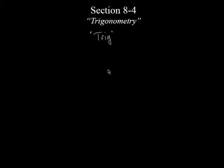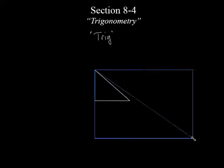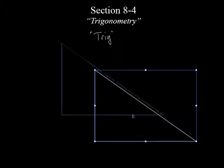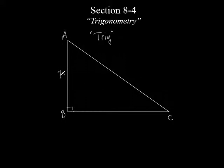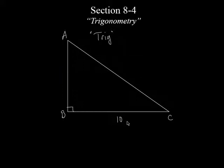For right now, we're just going to deal with right triangles, just like we've been talking about. I just happen to have a right triangle right here. This is a right triangle, so put a little right angle right here. We'll call this A, B, and C. Up to this point, if I said that this was 7 and this is 10 — two sides of a right triangle — you would have been able to find the missing side by the Pythagorean theorem.